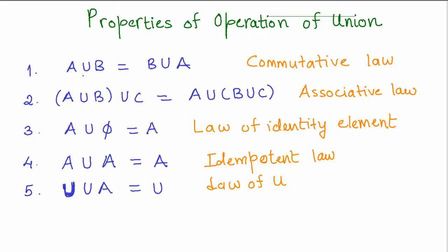You just have two collections of elements and all you are supposed to do is combine them, so it really doesn't matter which set you take first. In the example we did earlier, it wouldn't have mattered if you took set B first or set A first — the final set you ended up with would be the same in both cases. That is what the commutative law says: A union B equals B union A.